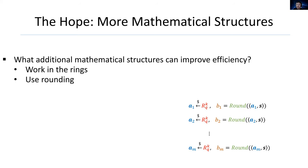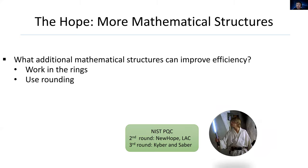Instead of working on Z_q to the n, we can work on R_q to the k for some ring R. And instead of adding errors to the inner product, we can use rounding. In fact, those two ideas have been explored in the NIST PQC standards. For example, the NewHope and NTRU in second round, and the Kyber and the Saber in third round.